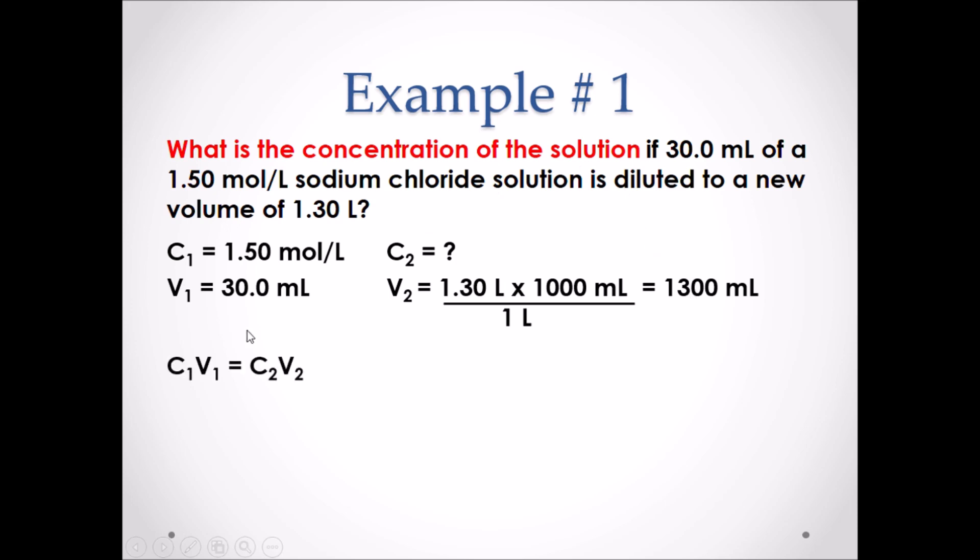If we rearrange our dilution formula, we are left with C2 equals V1 times C1 divided by V2, and if we input our data, as a result, the new concentration of the solution is 0.0346 moles per liter.